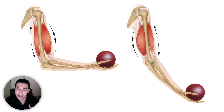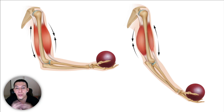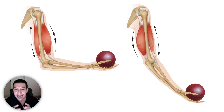The agonist is our prime mover and the antagonist is the opposing mover. The agonist is shortening and the antagonist is lengthening.